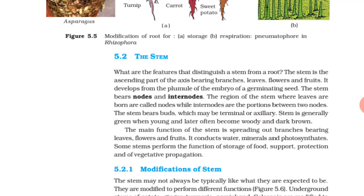The stem. What are the features that distinguish a stem from a root? The stem is the ascending part of the axis bearing branches, leaves, flowers, and fruits. It develops from the plumule of the embryo of a germinating seed. The stem bears nodes and internodes. The region of the stem where leaves are born are called nodes, while internodes are the portions between two nodes. The stem bears buds, which may be terminal or axillary. The stem is generally green when young and later often become woody and dark brown.